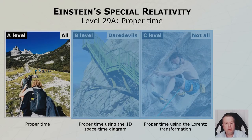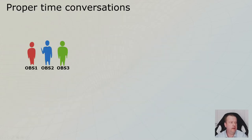Hi, my name is Tom and you are at level 29 in Mastering Einstein's Special Relativity. This episode talks about proper time. Let's get into it.